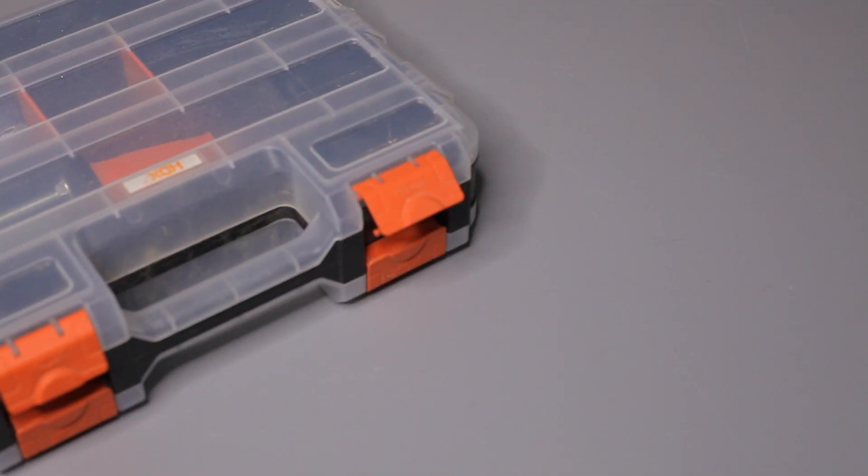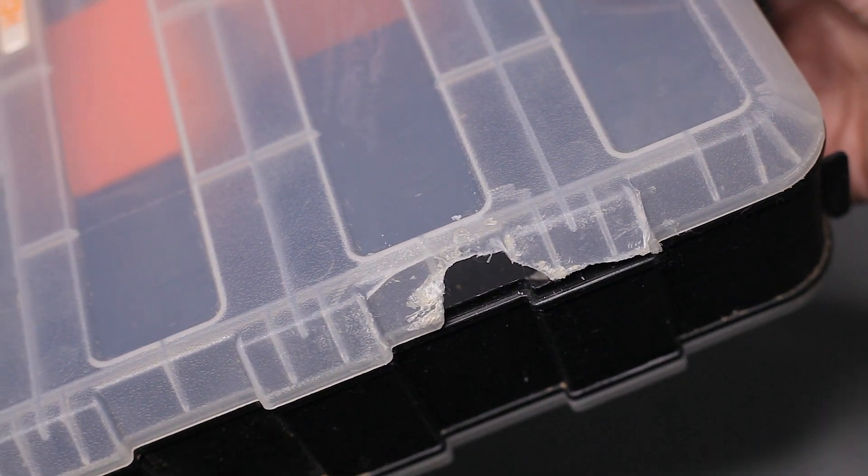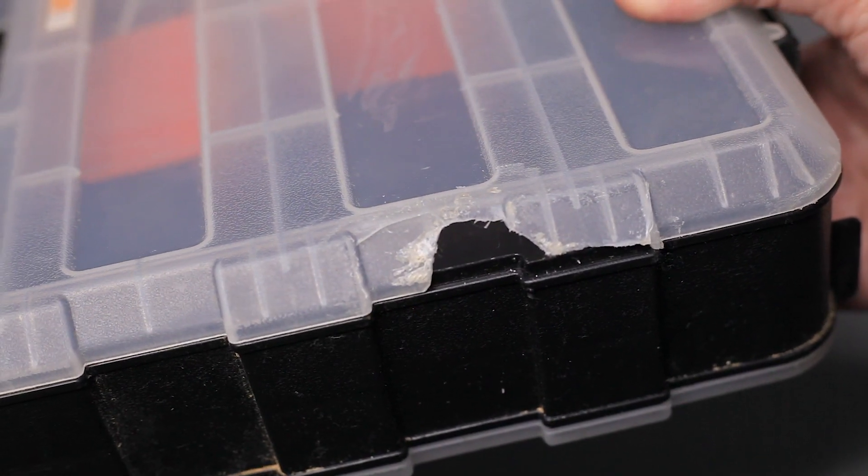So something like this parts organizer with this broken lid, we can actually fill in and repair that missing chunk with baking soda and super glue.